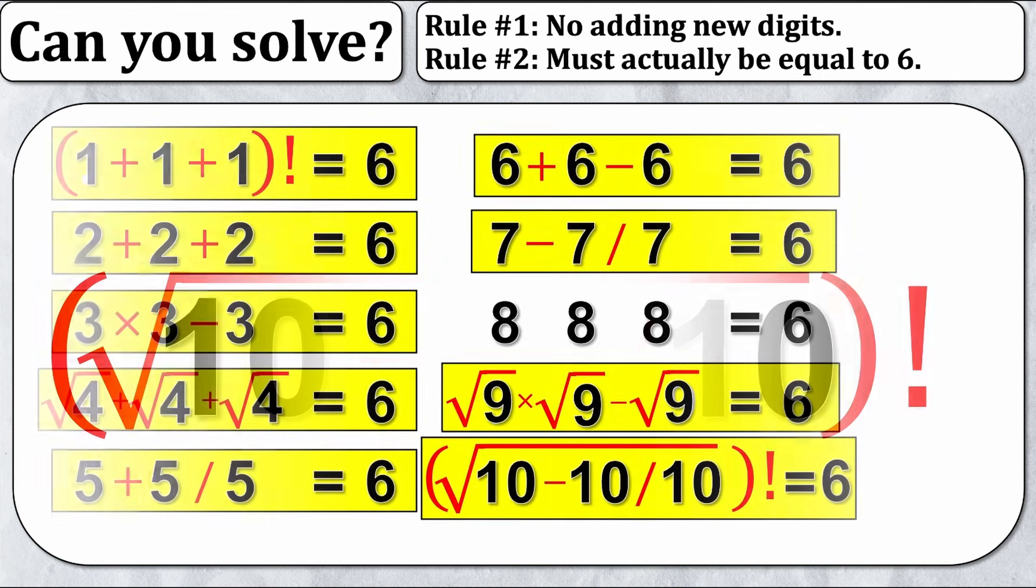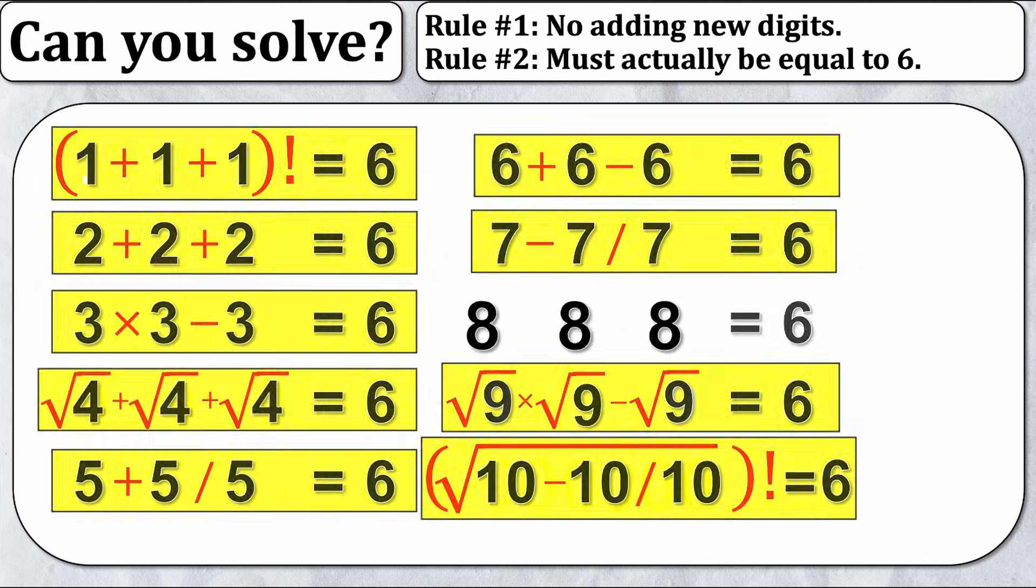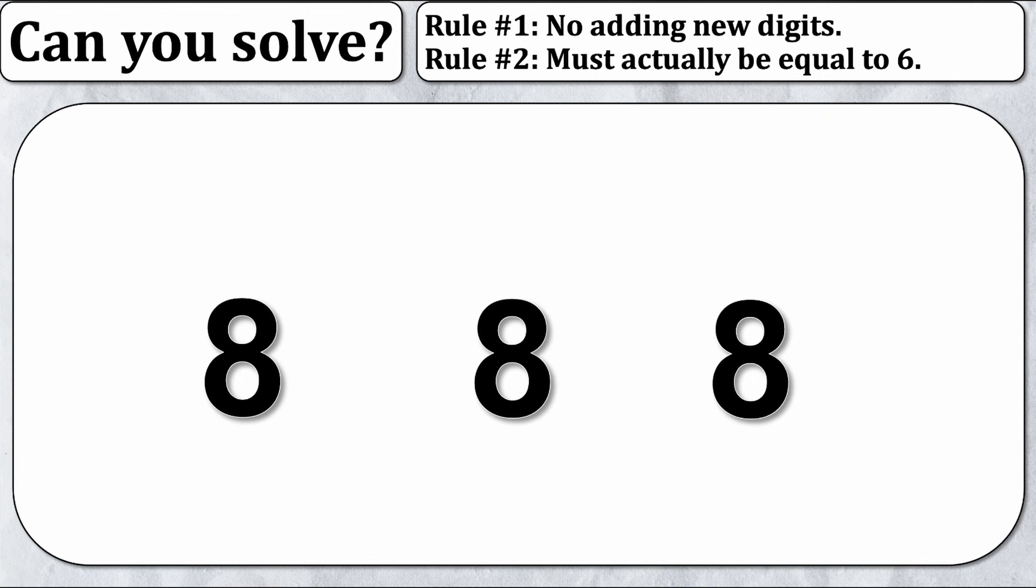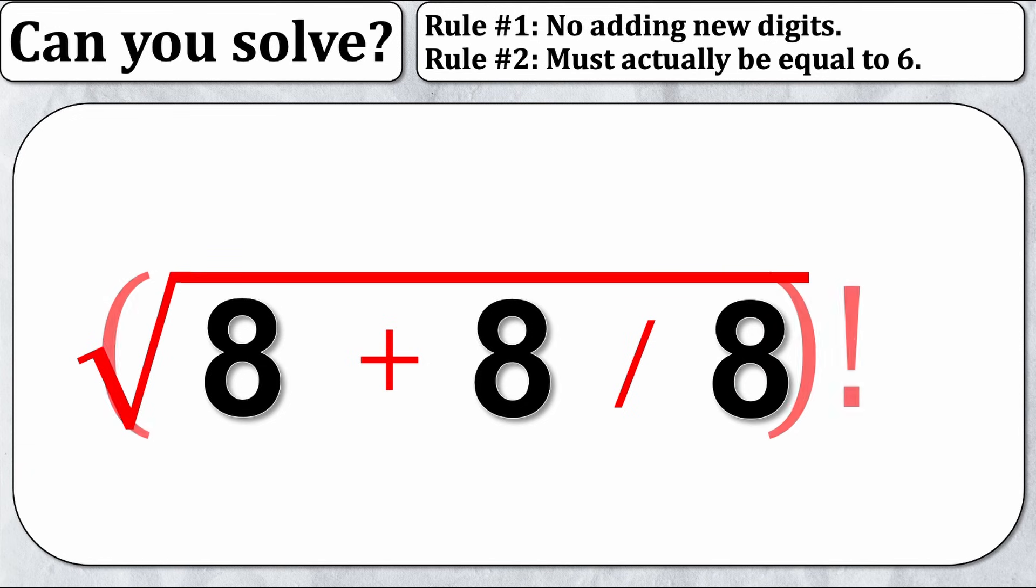Let's take a look at what many people will consider the hardest one, and that's eight. But it really follows the same premise that we just did for ten, just reverse. I'm still going to make it equal nine. So eight plus eight divided by eight. I'm going to square root all of that to get myself three, and then I'm going to factorial that to get myself six.